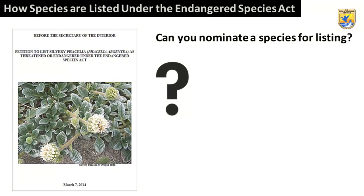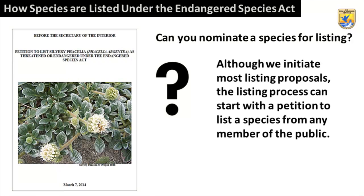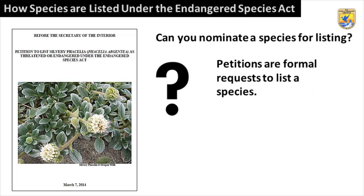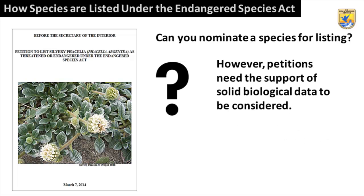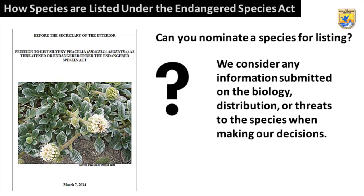Can you nominate a species for listing? Although we initiate most listing proposals, the listing process can start with a petition to list a species from any member of the public. Petitions are formal requests to list a species; however, they need the support of solid biological data to be considered. We consider any information submitted on the biology, distribution, or threats to the species when making our decisions.